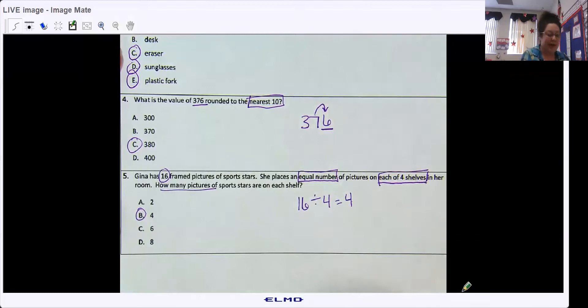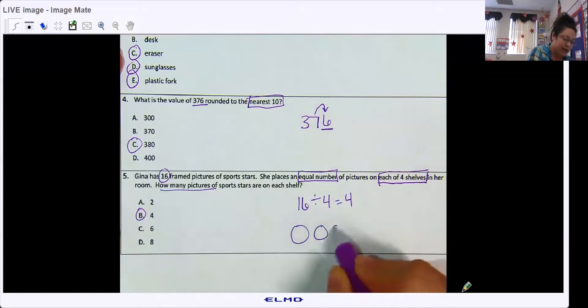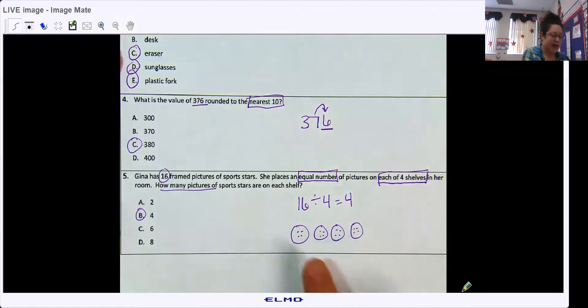If you are still not good with your facts, you need to make sure you are drawing pictures. You would have four bookshelves and 16 total dots. So you would put dots in each one equally until you get to 16, and that would tell you, you have four. All right, let's move on.